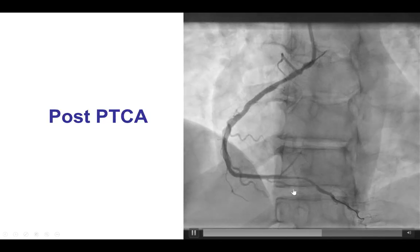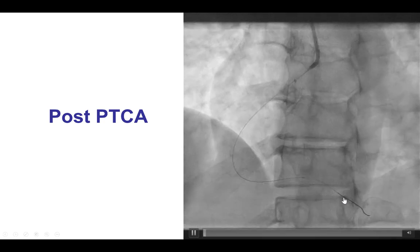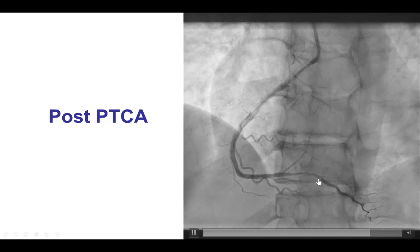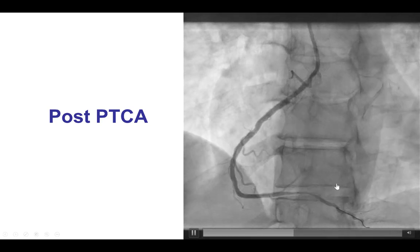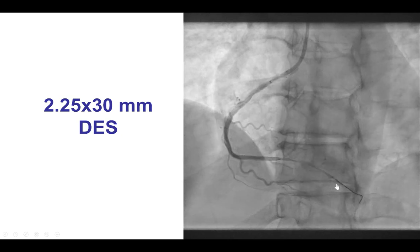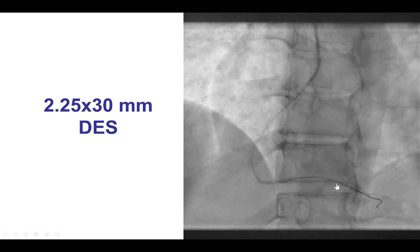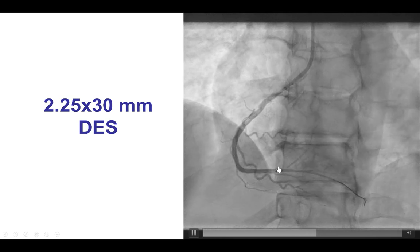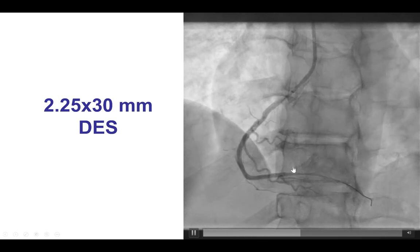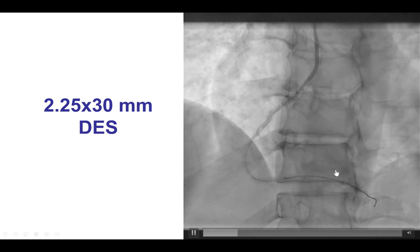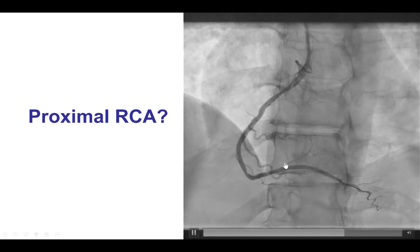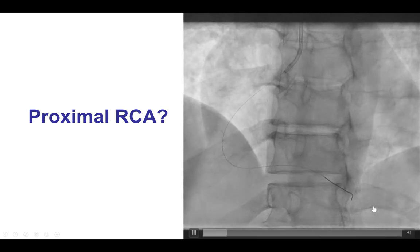Balloon angioplasty was done with a 2.0 mm balloon, and this actually restored TIMI flow to the PDA, demonstrating the area where the dissection was likely present. We then placed a long 2.25 by 30 mm drug-eluting stent. It is important to cover both edges of the dissection to minimize milking and pushing the hematoma either proximally or distally. That provided a nice result with TIMI flow in the PDA.